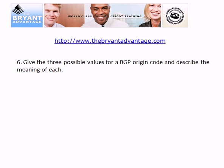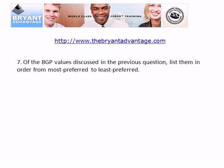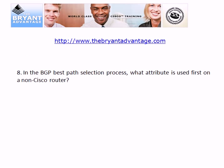Question 7 relates to question 6: of those BGP origin codes, list them in order from most preferred to least preferred. And speaking of most preferred — in the BGP best path selection process, what attribute is considered first on a non-Cisco router?